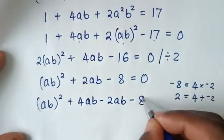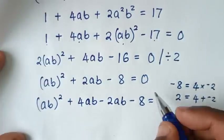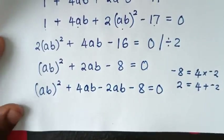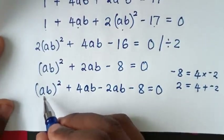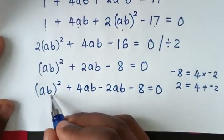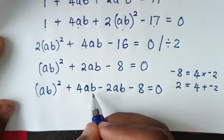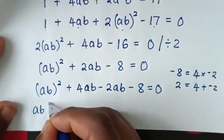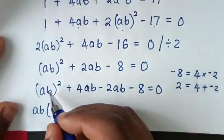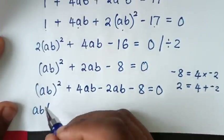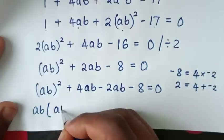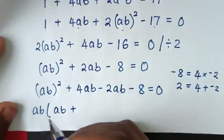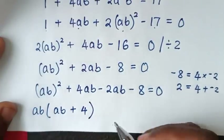Then minus 8 equals 0. From here, ab is common in the first two terms, so we take ab out of the bracket: ab(ab + 4).